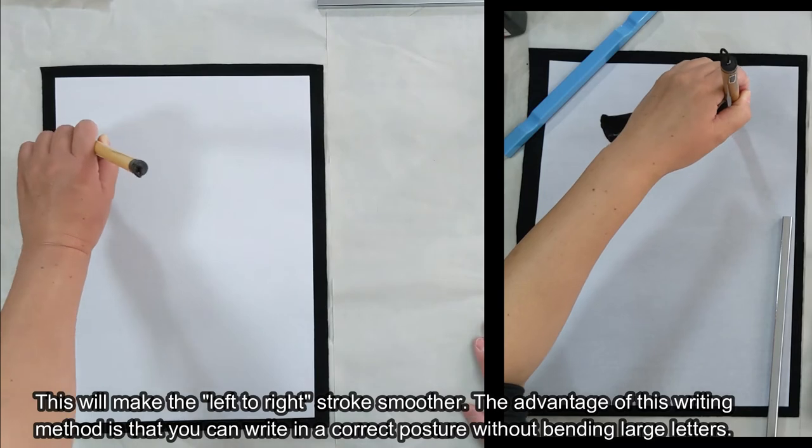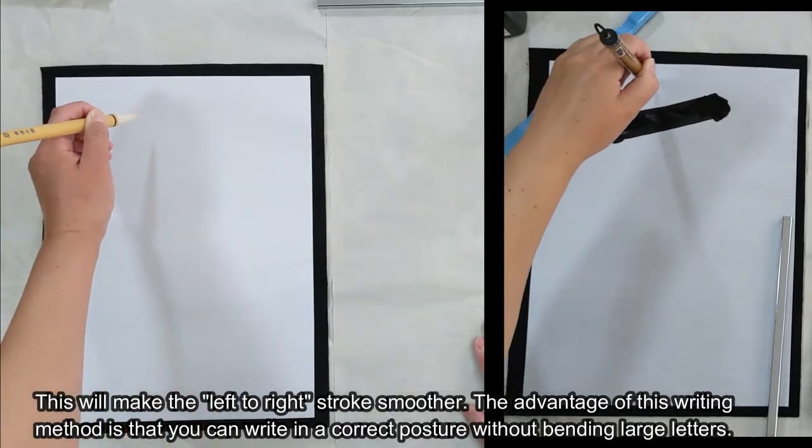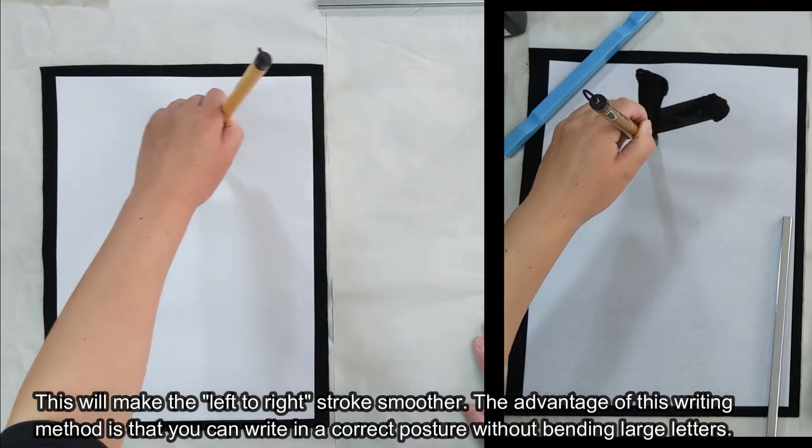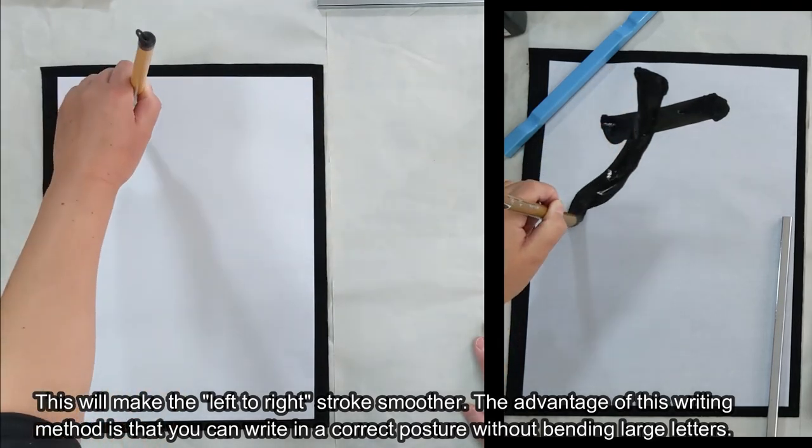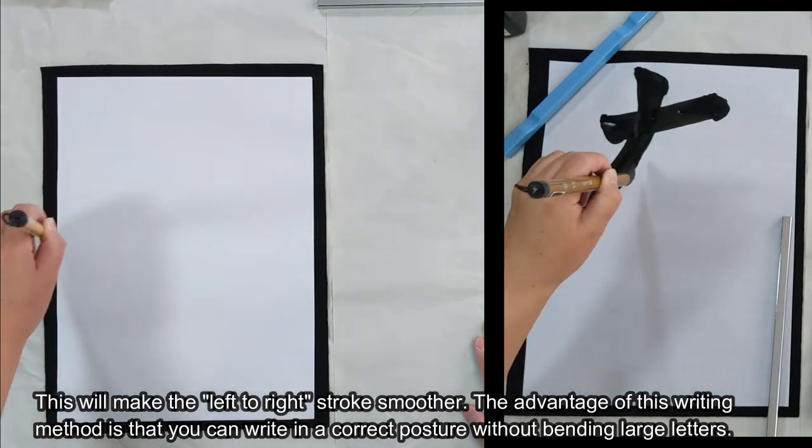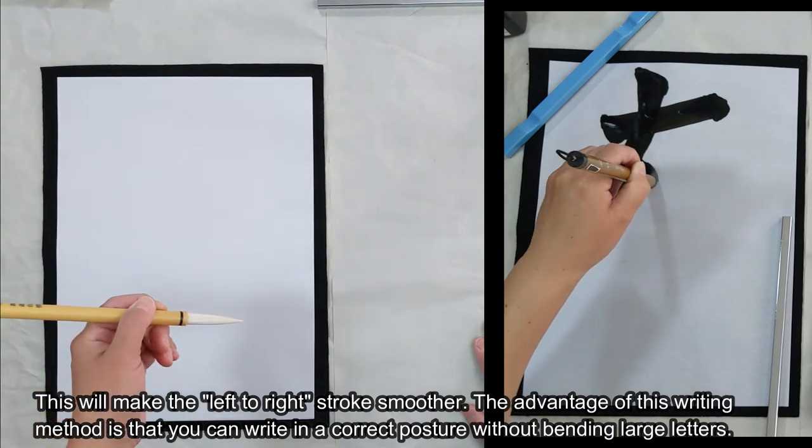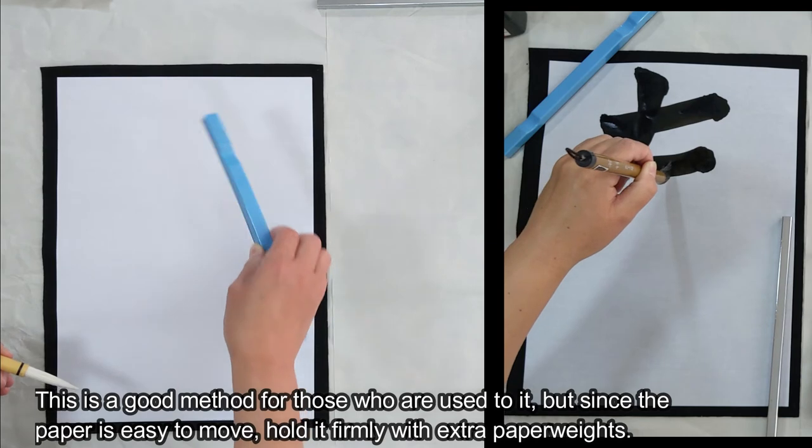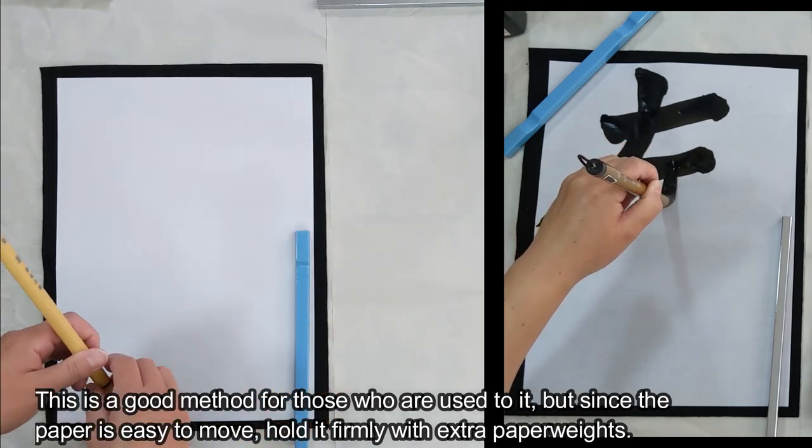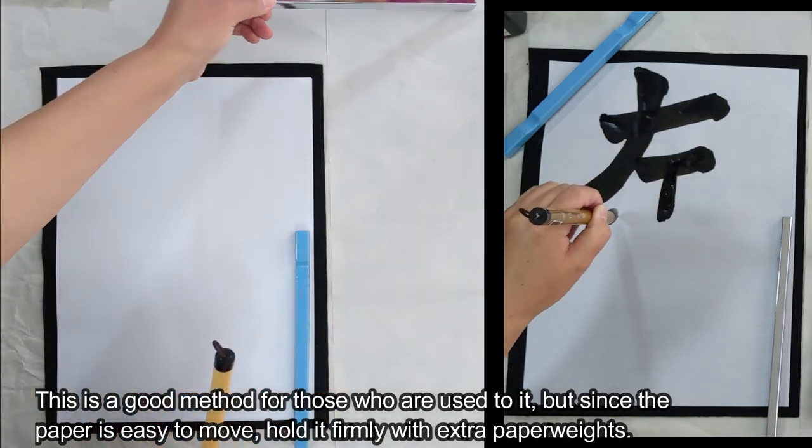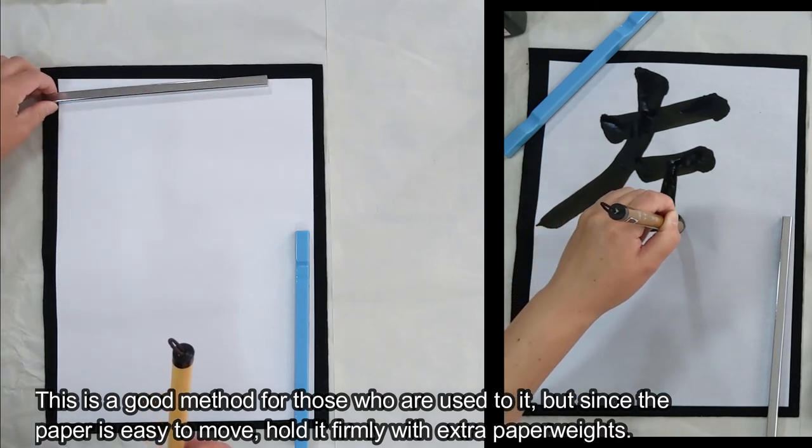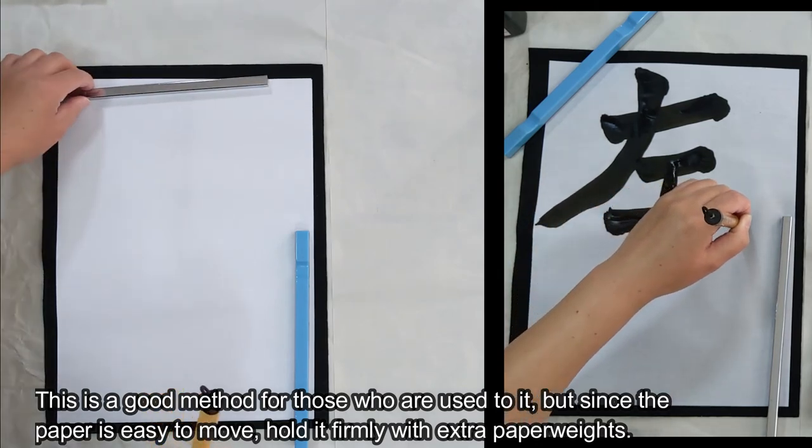This will make the left to right stroke smoother. The advantage of this writing method is that you can write in correct posture without bending large letters. This is a good method for those who are used to it. But since the paper is easy to move, hold it firmly with extra paper weights.